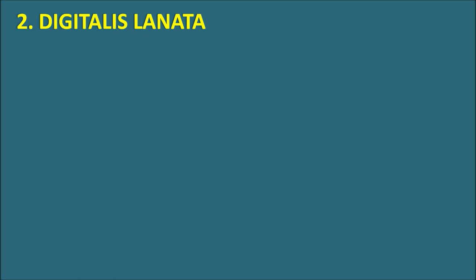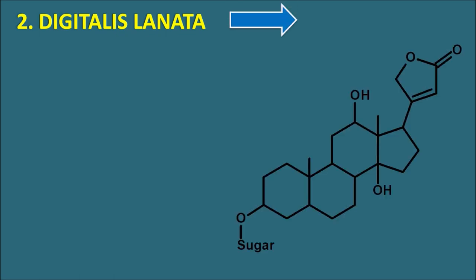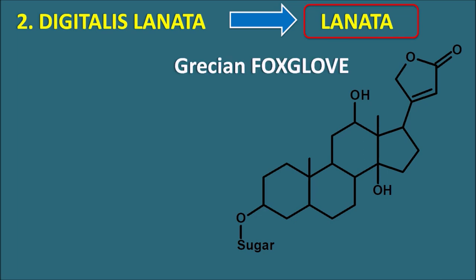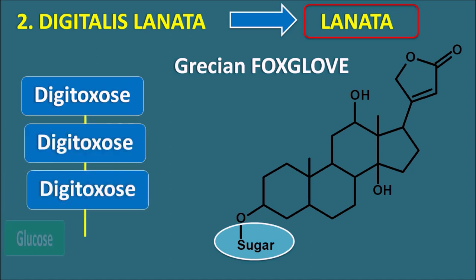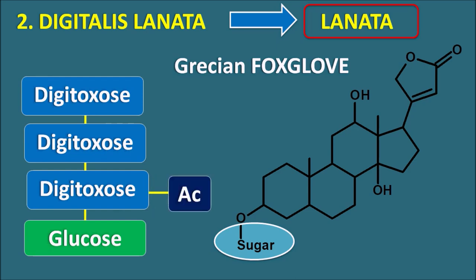The second plant is Digitalis lanata, also known as the lanata species, commonly called Grecian foxglove. Like Digitalis purpurea, it has three digitoxose units with a terminal glucose moiety, but at the last digitoxose unit an acetyl group is attached — making it an acetyl-digitoxose unit. Thus Digitalis lanata has acetylated glycosides compared with Digitalis purpurea.